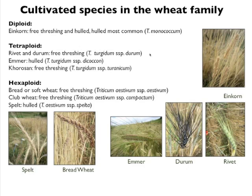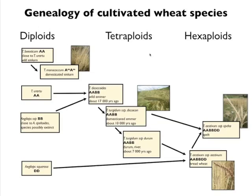The hexaploid species — the most common — are bread wheat or soft wheat. That's what most people think of when they think of wheat. Club wheat is a related species used primarily for pastry and grown in the Pacific Northwest, and then spelt, which is a hulled relative of bread wheat and also needs to be de-hulled before being used as food.